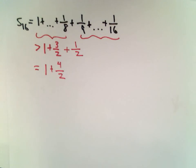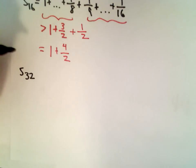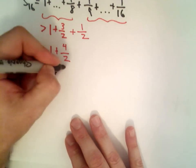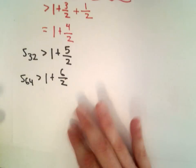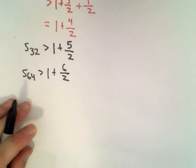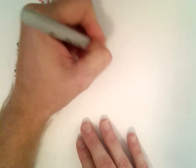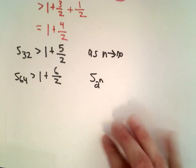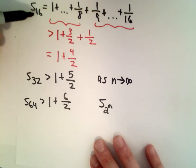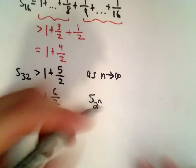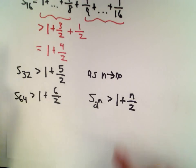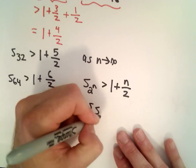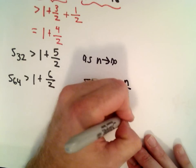If you add up the first 32 terms, that's going to be greater than 1 plus 5 over 2. If you go out to S sub 64, that's going to be greater than 1 plus 6 over 2. You can extend this pattern indefinitely. So as n goes to infinity, S sub 2 raised to the power of n—we're really using powers of 2 here, 2 to the 4th, 2 to the 5th, 2 to the 6th—that's always going to be greater than 1 plus n over 2. That shows that this partial sum, S sub 2 raised to the n, is also going to approach infinity.